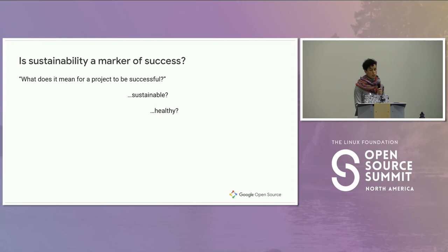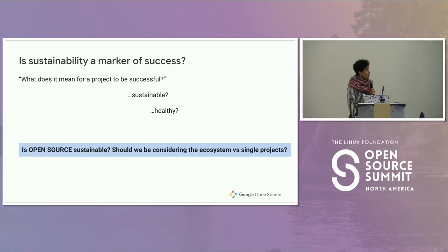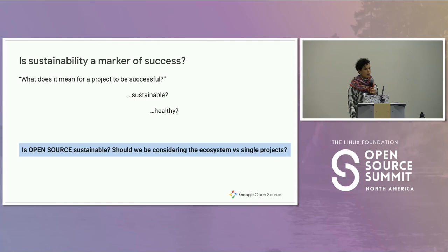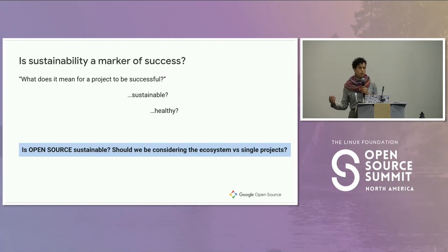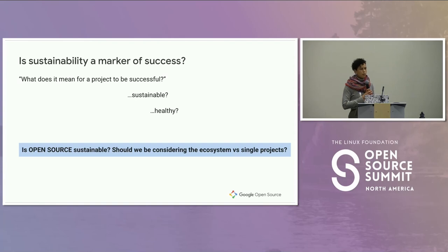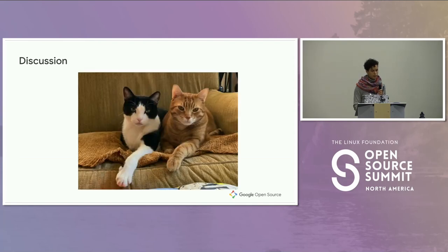I've been talking about sustainability from the lens of individual projects, but thinking more about it, I'm not sure that's the right level. Maybe we should be thinking about the entire ecosystem. Thinking about the Linux Foundation and all the hundreds of projects below it — while communities like ours are separate pockets with our own models, there's a lot of overlap: people, foundations, companies, funding, and infrastructure shared across a whole number of projects. Maybe when we think about sustainability, we should really be thinking about the ecosystem, not any individual project.